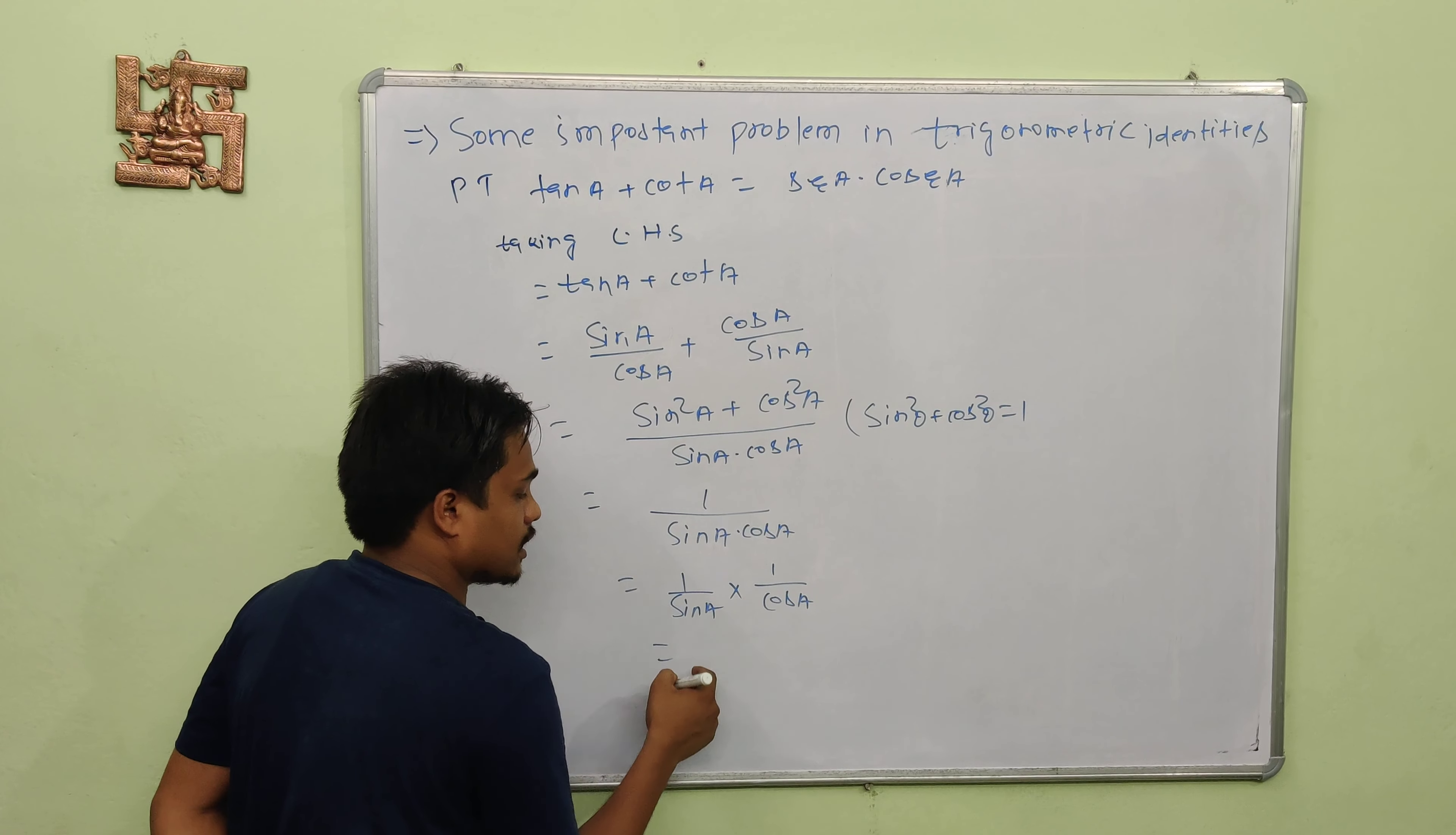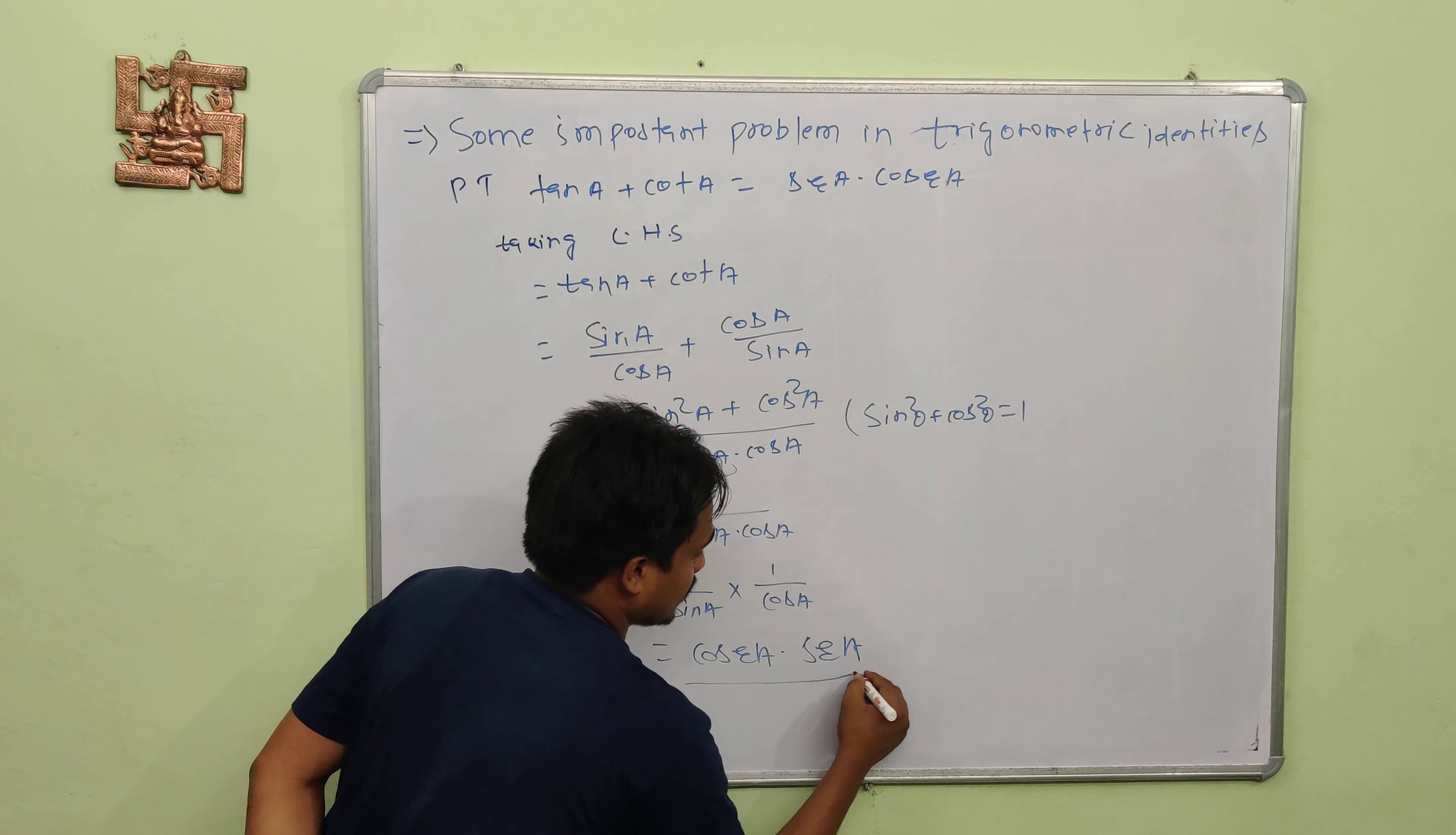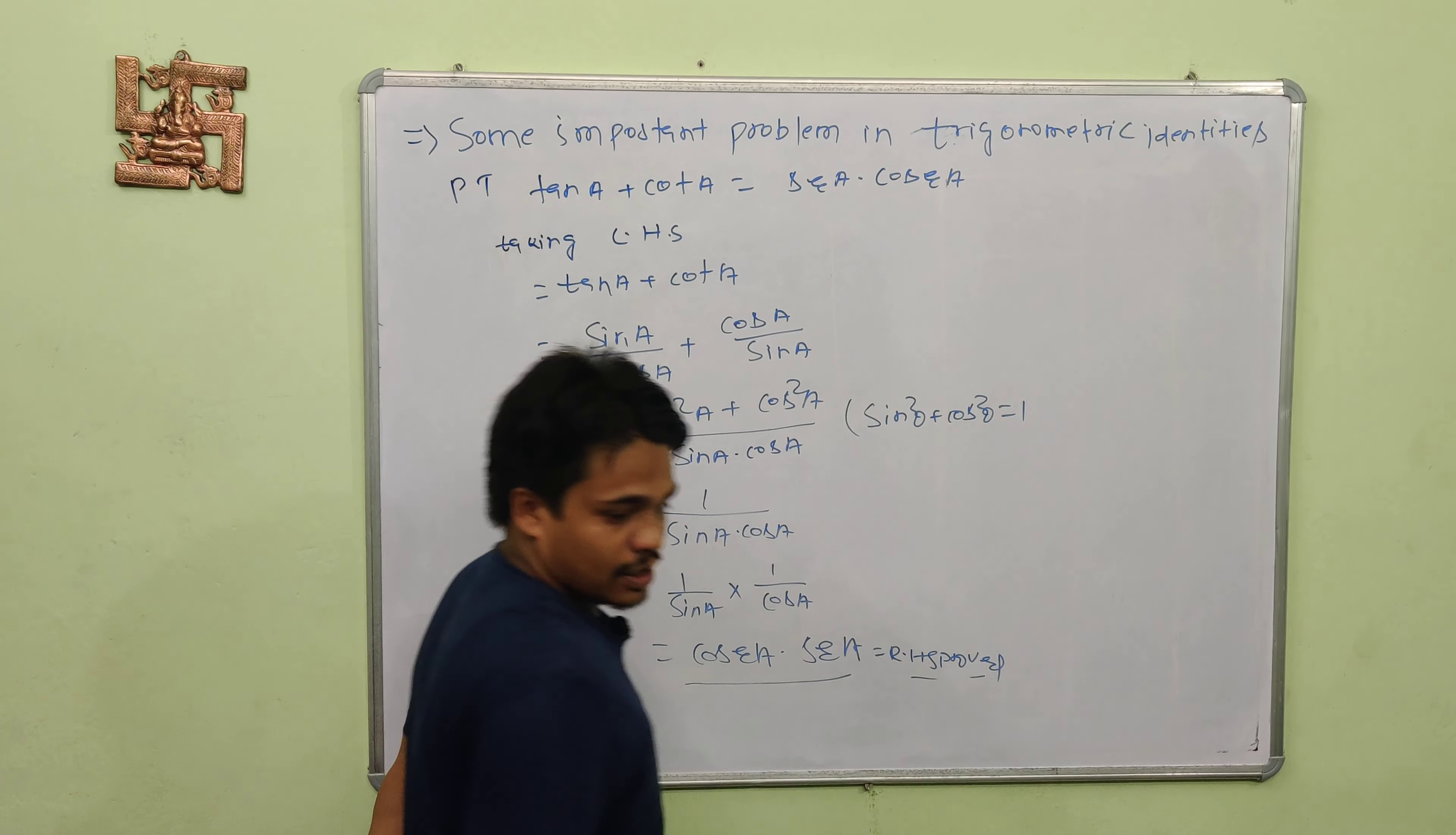Now 1 by sin A into cos A can be separated as 1 by sin A times 1 by cos A, which equals cosec A times sec A. This is our RHS, hence proved.